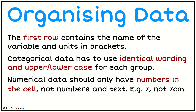For categorical data, we will need to use identical wording in the same upper and lower case for every group that we have. So if I was talking about different species of Kiwis — the Great Spotted Kiwi — if I use a capital letter for 'Great' and 'Spotted', then every time I refer to the Great Spotted in that column, I need to use the same capital letters in exactly the same locations. Otherwise, it doesn't recognise that it's the same and treats it as a different group. The same applies if there's an extra space at the end or before it — the program will treat it as different to the other groups.